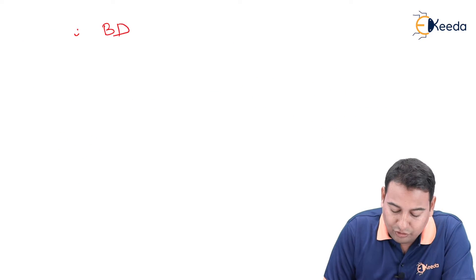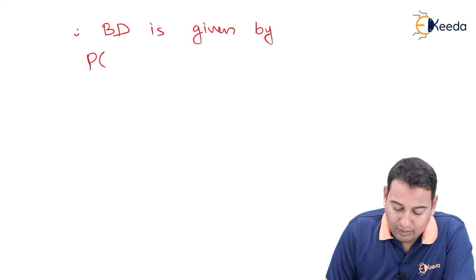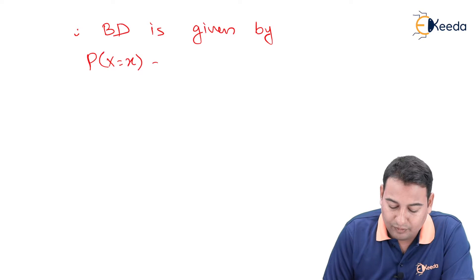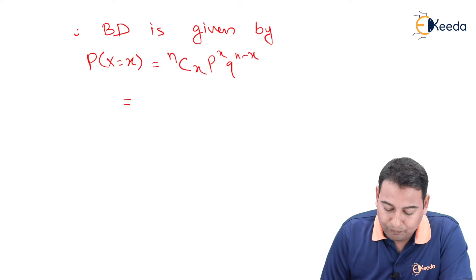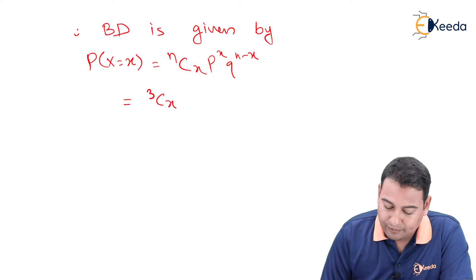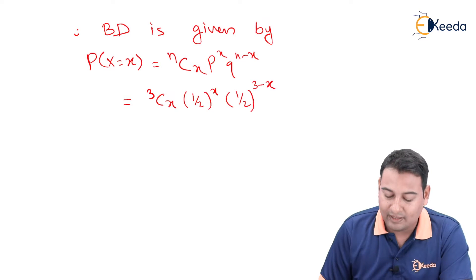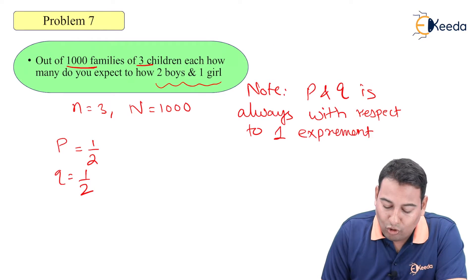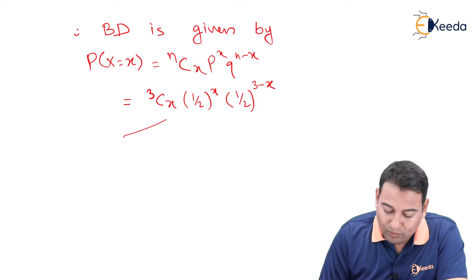Therefore, binomial distribution is given by P(x=x) = nCx P raise to x Q raise to n minus x. Here n is 3, x, P is half and Q is also half, that is 3 minus x. Now, let us check what is asked, two boys and one girl.